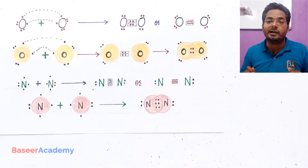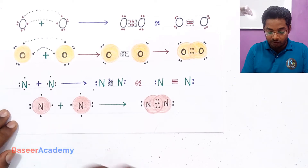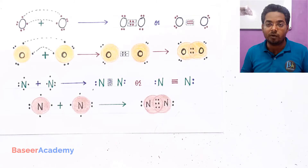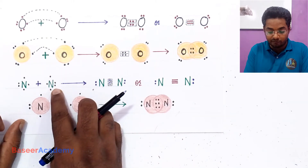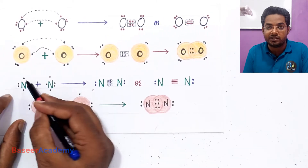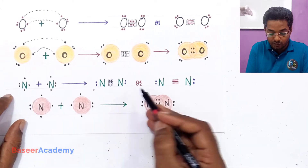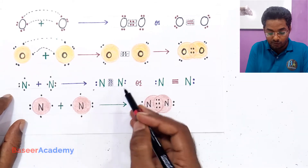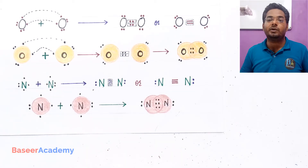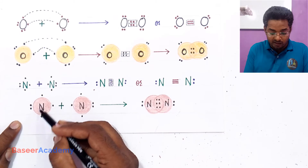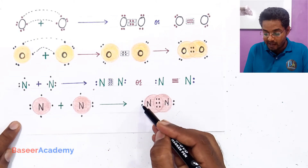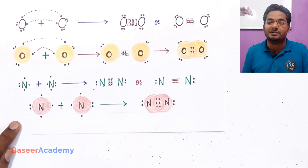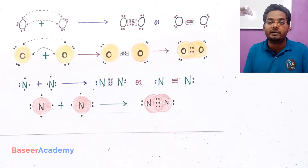Let us see the formation of the nitrogen molecule. Nitrogen's atomic number is 7, electronic configuration 2,5 — it has five valence electrons. The Lewis symbol of each nitrogen atom is written down, with unpaired electrons facing each other. These two unpaired electrons combine to form a bond, and then the next two unpaired electrons also combine to form another bond. In the nitrogen molecule we have three covalent bonds, so nitrogen forms a triple bond. Previously nitrogen had five valence electrons; now each nitrogen atom has 2,4,6,8 — eight electrons — meaning both atoms achieved the octet.